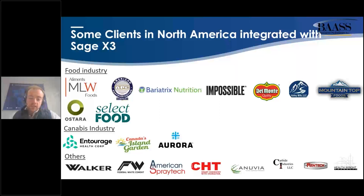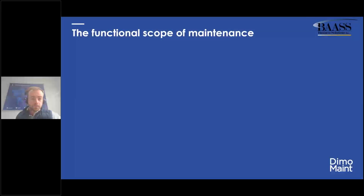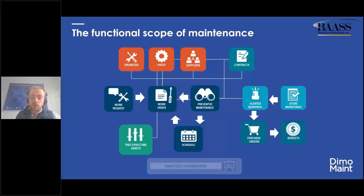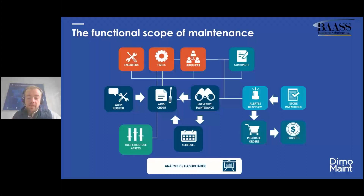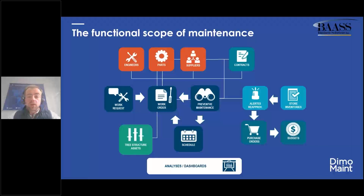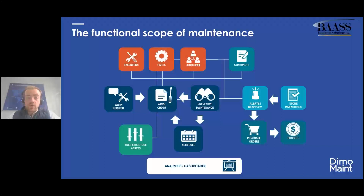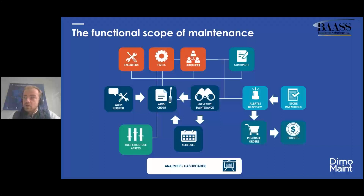At the end of this presentation I'll show some testimonies from clients using Dimo MX integrated with X3. Regarding the functional scope of Dimo MX, first you'll have a perfect view of all the assets available within the firm. You can structure them in a tree structure — for example by region, then by plant, then infrastructure and production lines — and you can go as deep as you want; there is no limit on the levels.